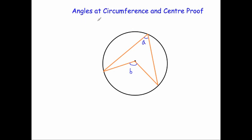In this video we're going to look at the angles at the circumference and centre proof. Here we've got our circle with the angle at the centre B and the angle at the circumference A. What we want to show is that angle B is twice the size of angle A — in other words, 2 times A equals B.